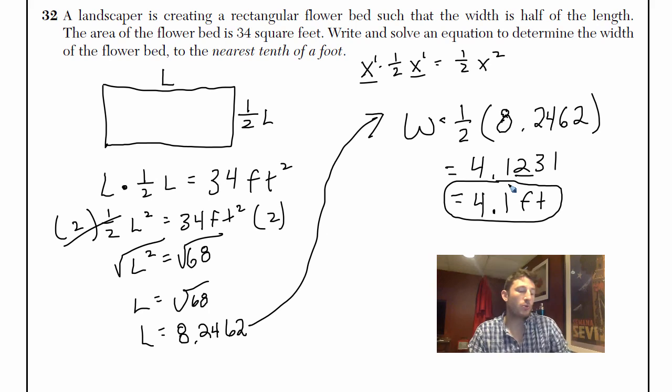And you could write a little quick sentence there. I'm not going to write it because I think I'm running out of space, but you could write the width of the flower bed is 4.1 feet rounded to the nearest tenth. There you go. Alright guys, that's all you gotta do. Good luck.